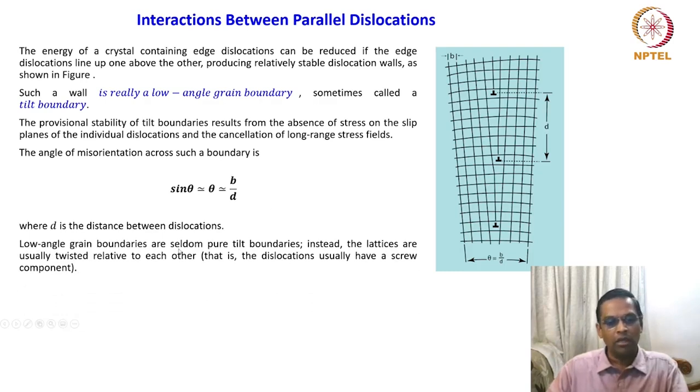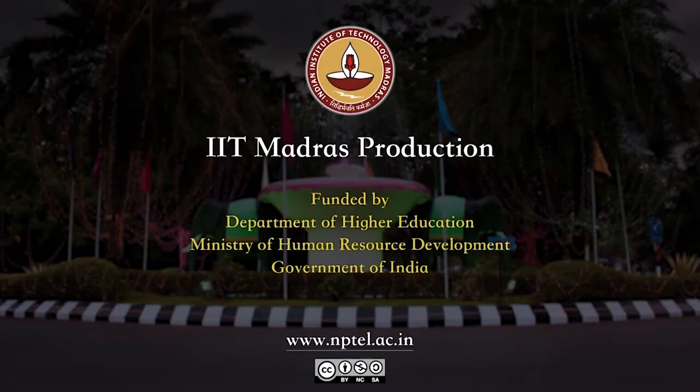Low angle grain boundaries are seldom pure tilt boundaries. Instead, the lattices are usually twisted relative to each other; that is, the dislocations usually have screw components. This kind of deviations will always be there in real systems. We brought this idea because it gives a very nice example of how the stress field around this dislocation will get annihilated and how it forms a stable configuration.